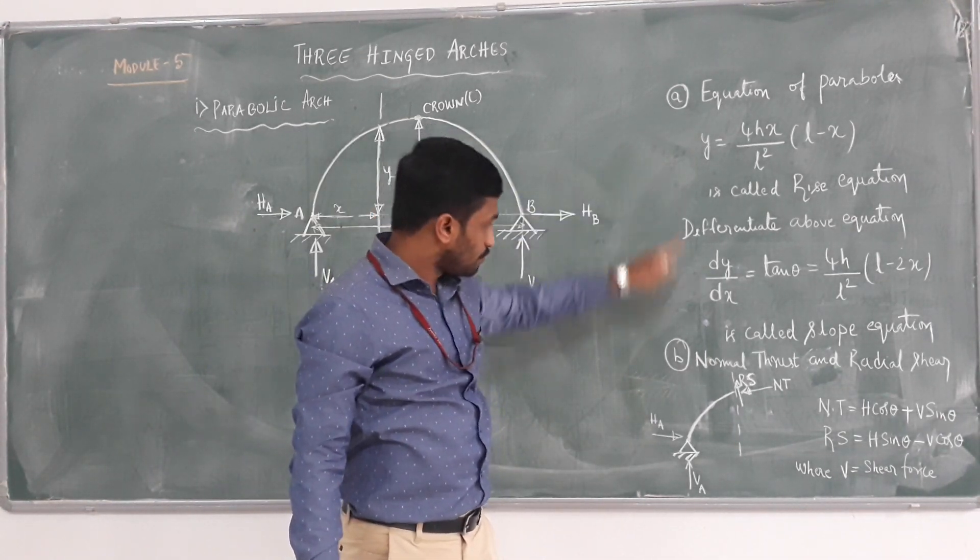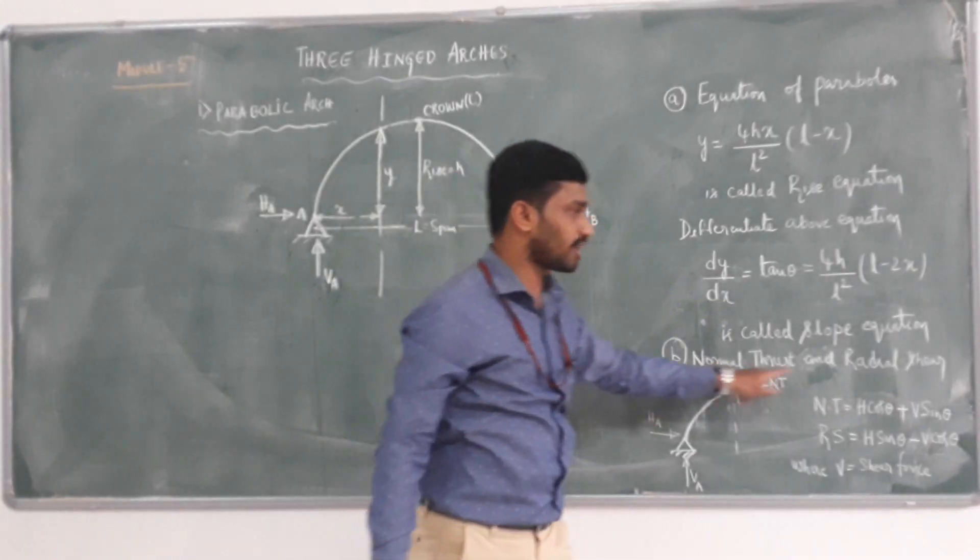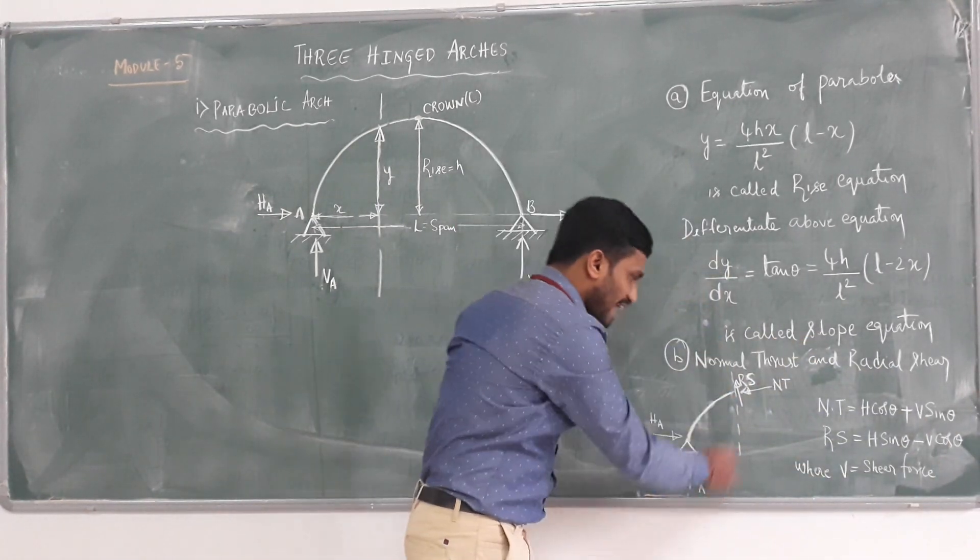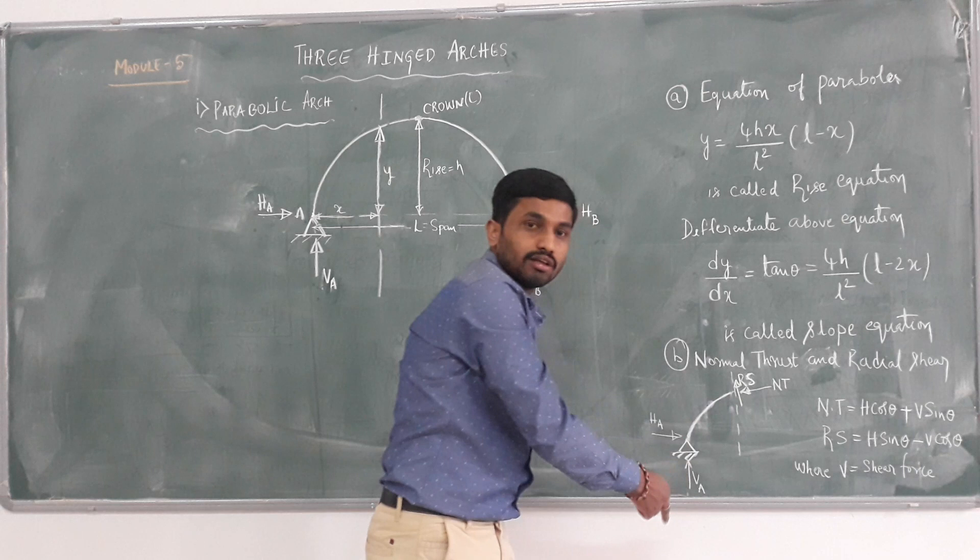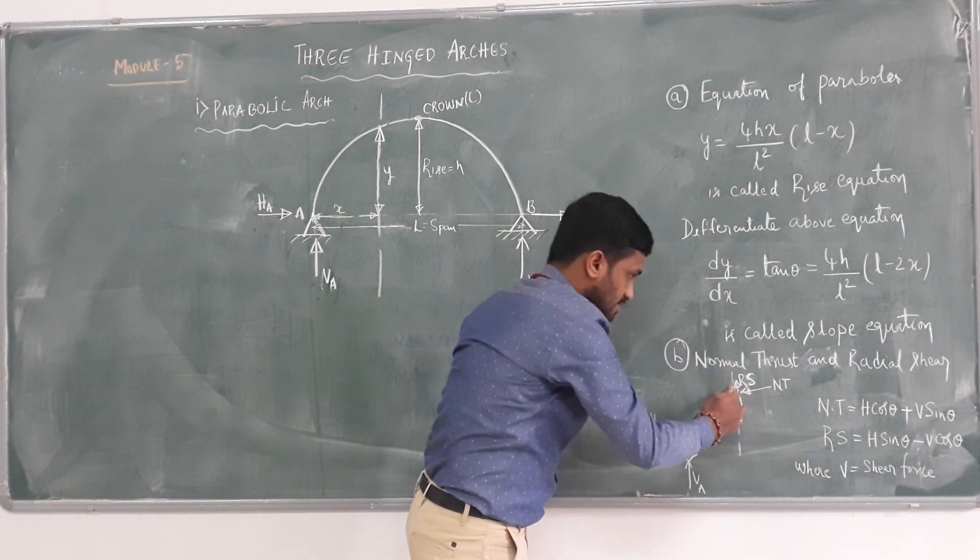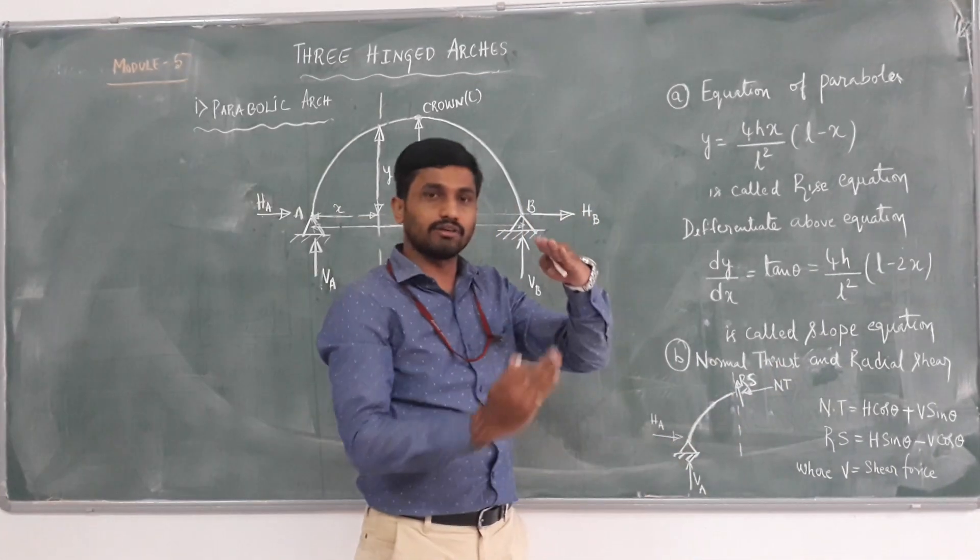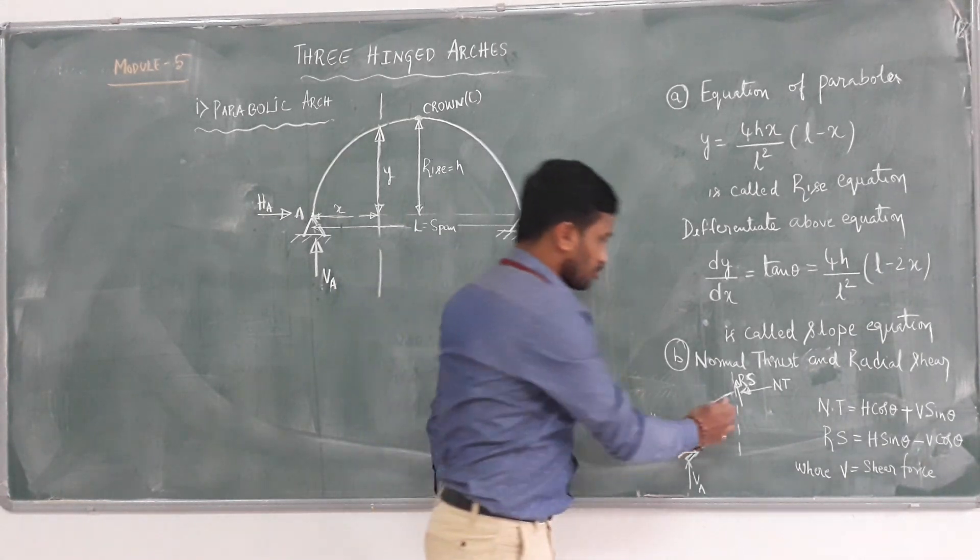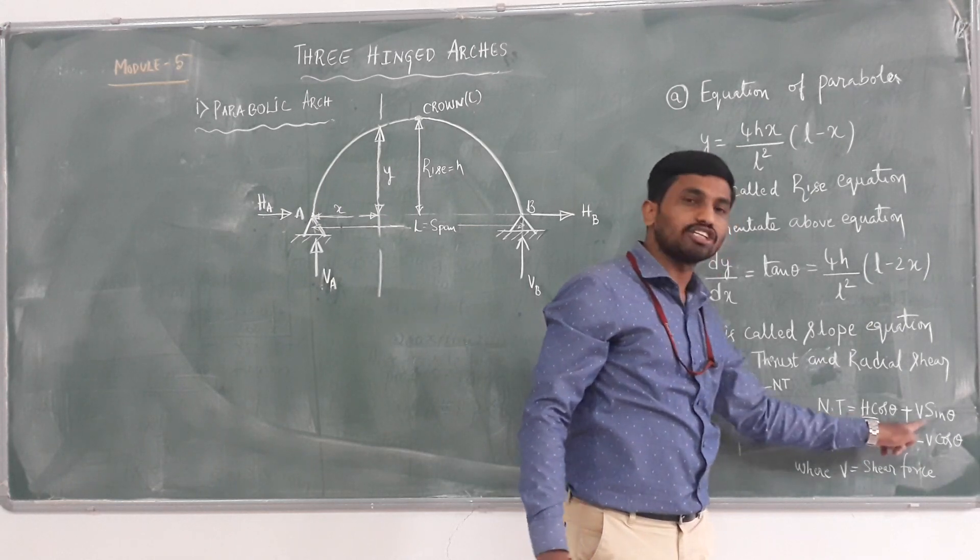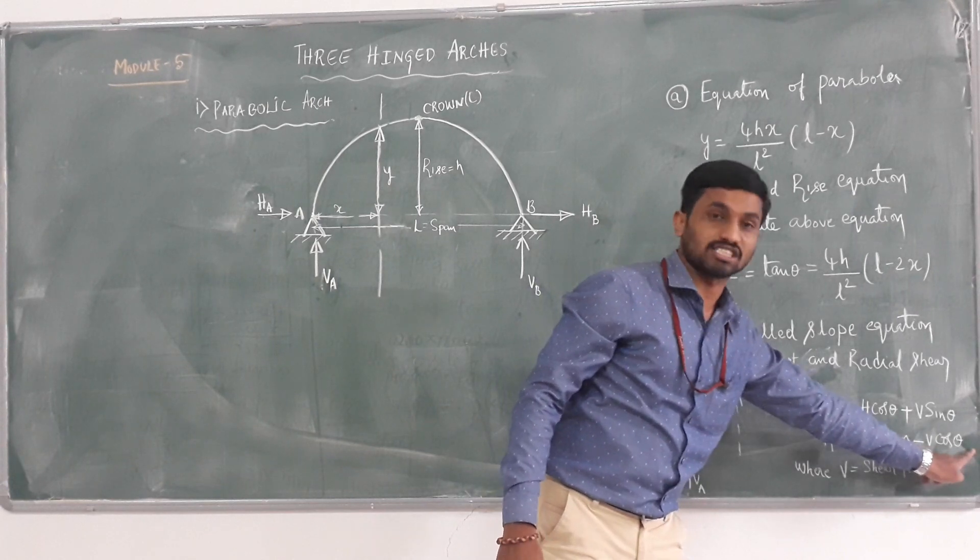After this, we have to determine normal thrust and radial shear. What is meant by normal thrust and radial shear? Please remember this generalized equation. If you consider any section, at that particular section, if you consider this arch, perpendicular to particular section is normal thrust, and the shear developed in radial direction is called radial shear. So normal thrust equals H cos theta plus V sin theta, and radial shear equals H sin theta minus V cos theta.